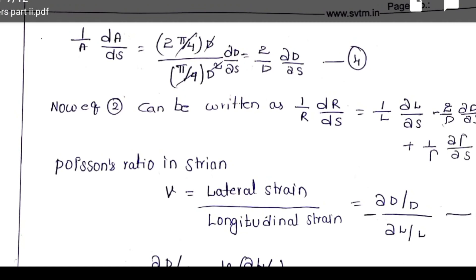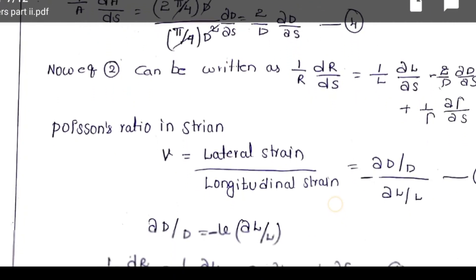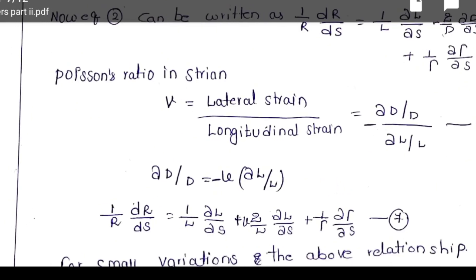Now equation 2 can be written. According to Poisson's ratio and strain, from strength of materials: Poisson's ratio equals lateral strain by longitudinal strain. The formula is: lateral strain is dou D by D, longitudinal strain is dou L by L. We can write according to Poisson's ratio: dou D by D equal to minus U times dou L by L. That we make equation number 7: 1 by R times dR by dS.